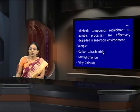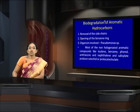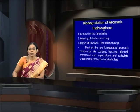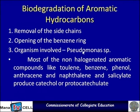Examples include carbon tetrachloride, methyl chloride, and vinyl chloride. In the biodegradation of aromatic hydrocarbons, aromatic hydrocarbons have side chains, so those side chains must be removed first, and then the opening of the benzene ring should take place. The main organism involved in biodegradation of aromatic hydrocarbons is Pseudomonas species.